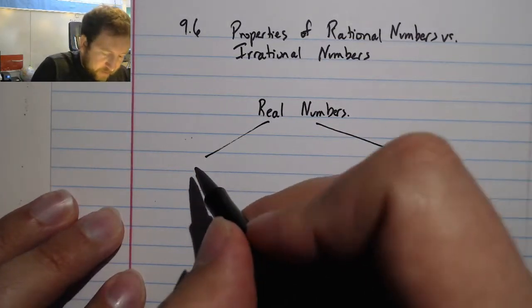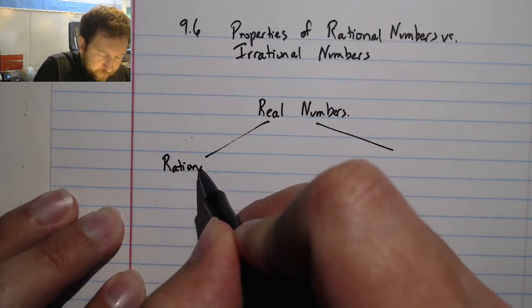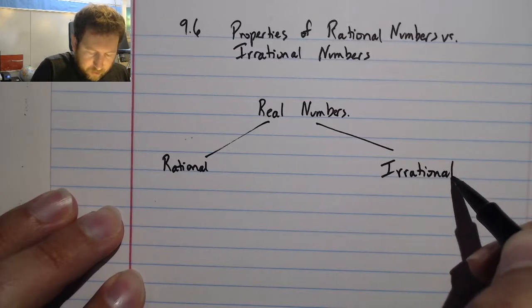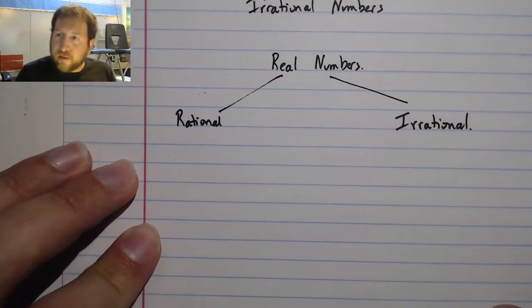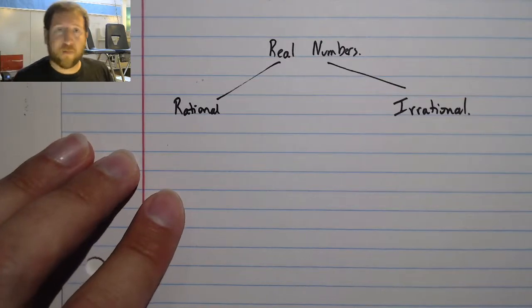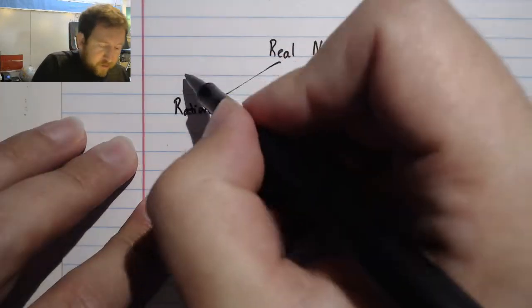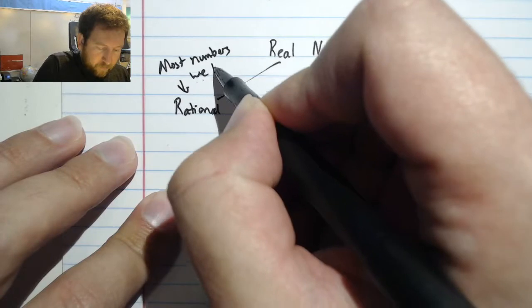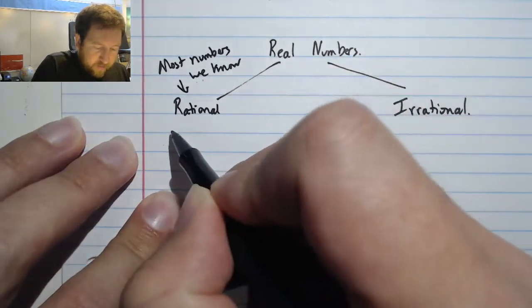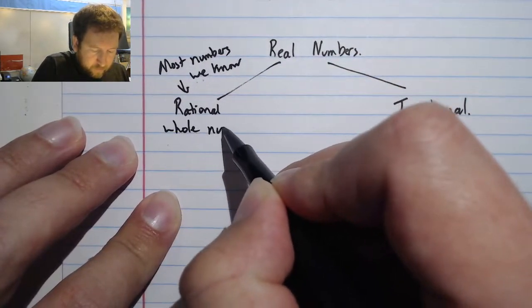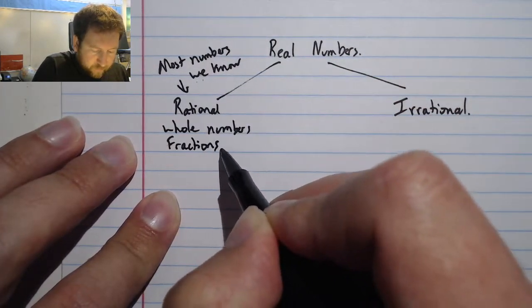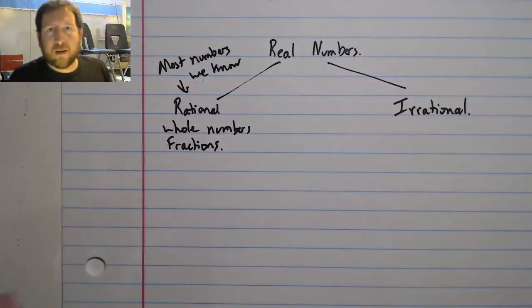The first side we have is our rational numbers. The second side is the irrational. Almost all the numbers that we've been talking about thus far in your entire mathematics career fit into the rational numbers. This would be most numbers we know.